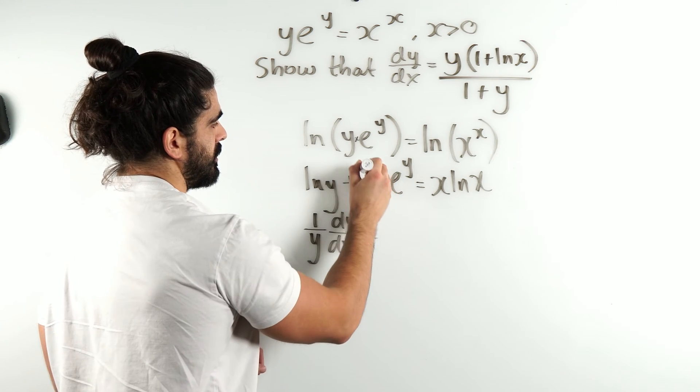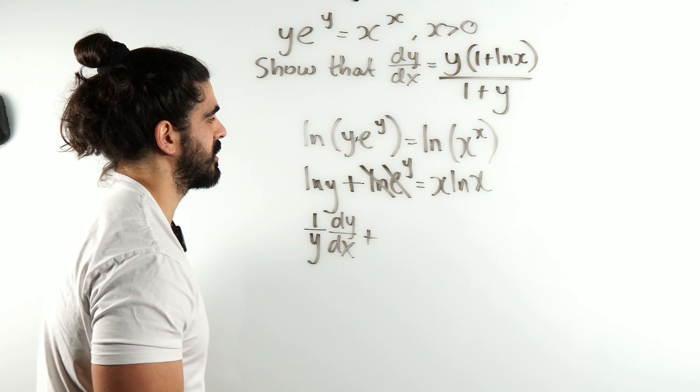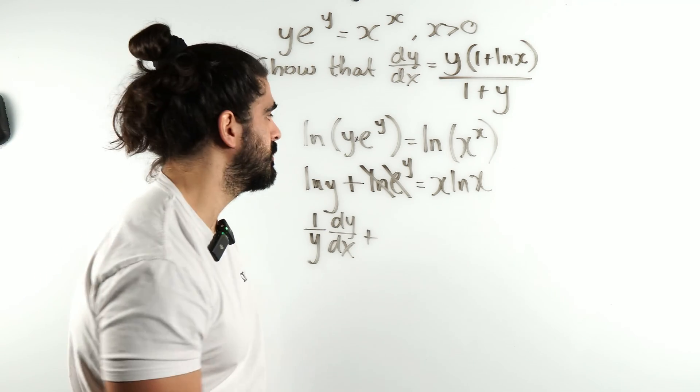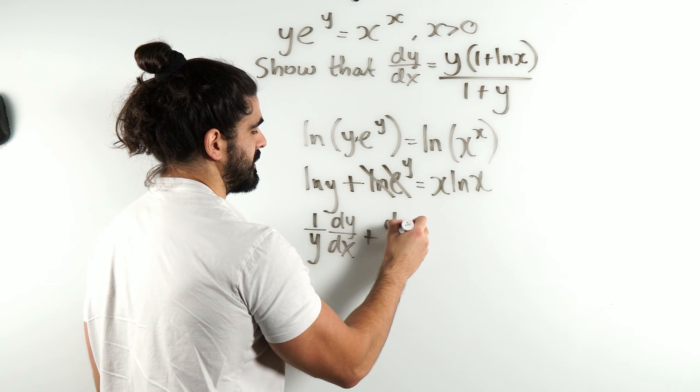Now here, ln and e are inverses of each other, so they cancel. We're just left with y. y differentiates to 1, so it's just 1 times dy/dx.